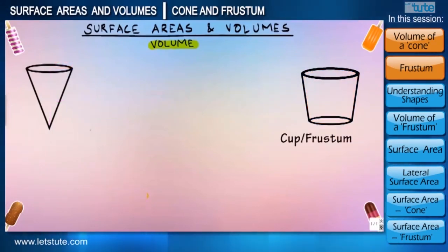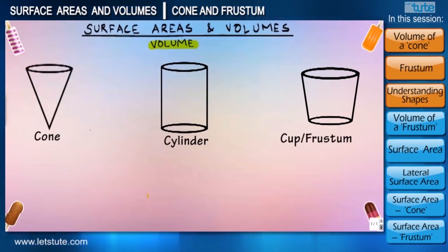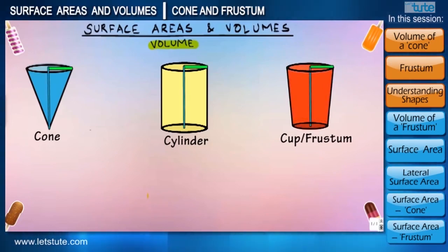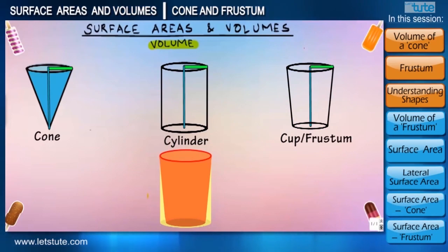Before we proceed to find the volume of the cup, let us first understand this shape of the cup in contrast to the cylinder and the cone. So let us consider a cone, a cylinder, and frustum and keep their parameters same just like we did before. We will keep their radius and their height similar. Now in such a condition, if we try to fit a frustum into the cylinder, it will look as if the upper circular surface of both of these shapes will be same.